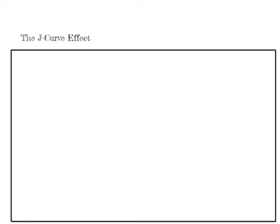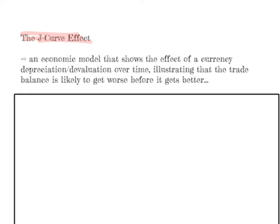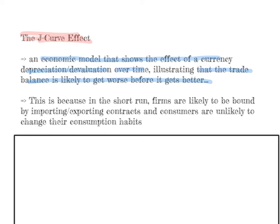This brings us to the second topic: the J-curve effect. The J-curve effect is an economic model that shows the effect of a currency depreciation or devaluation over time, illustrating that the trade balance is likely to get worse before it gets better. In the short run, firms are likely to be bound by importing and exporting contracts, and consumers are unlikely to change their consumption habits, so demand is likely to be very inelastic.